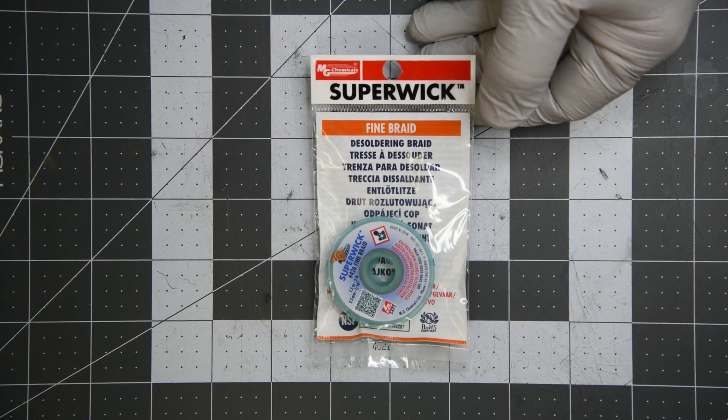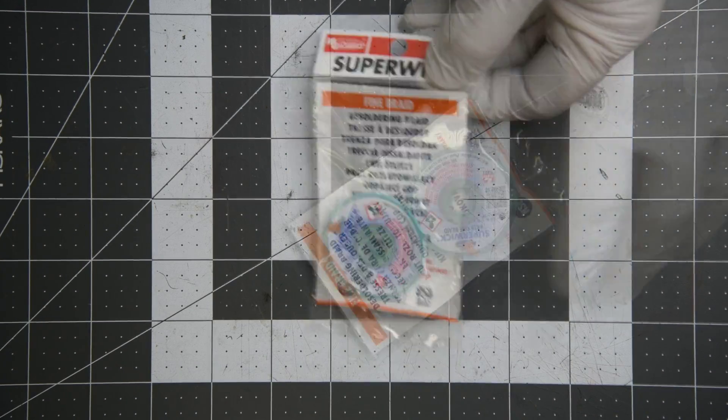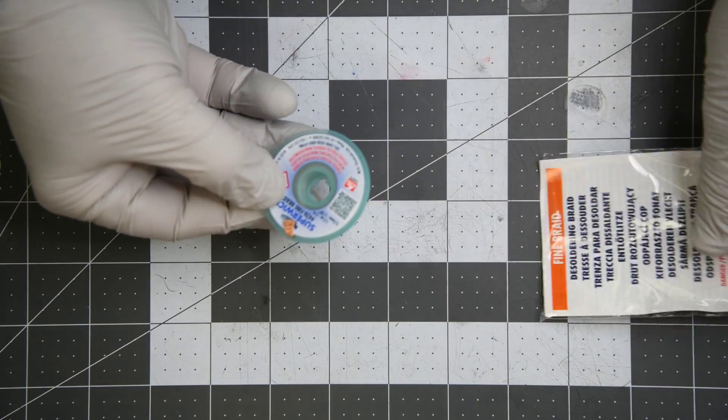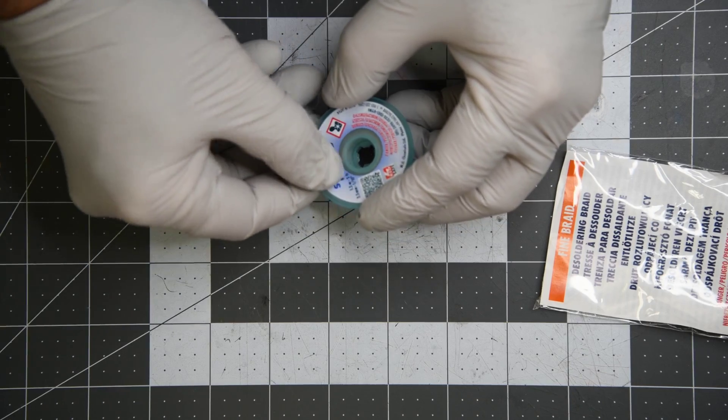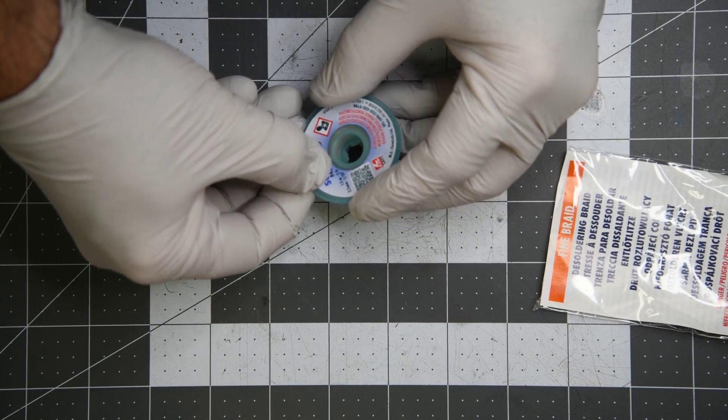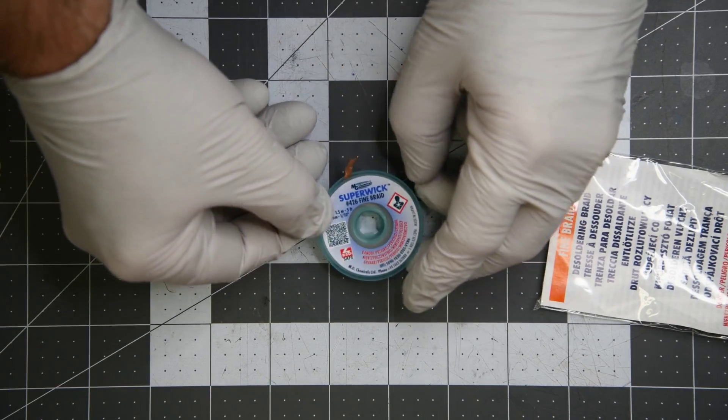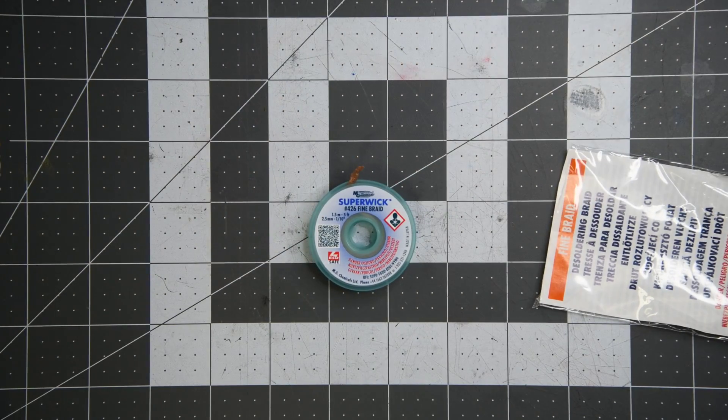The MG Chemicals wick. This wick is made in Japan. It's .1 inches wide and it has an RMA flux. I've probably used this before, I just don't remember. I've used so many MG Chemicals products that I would be surprised if I hadn't tried their solder wick. This is a 5-foot spool at $0.69 a foot.